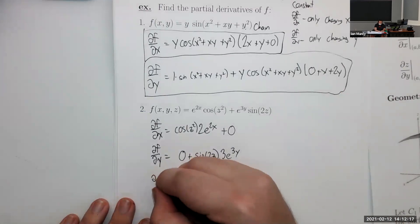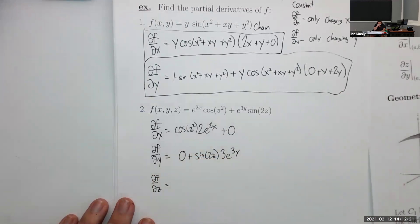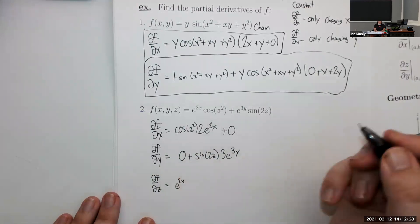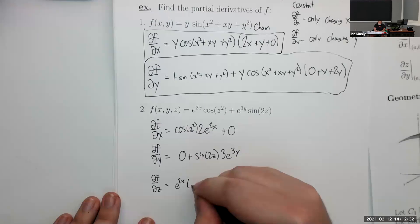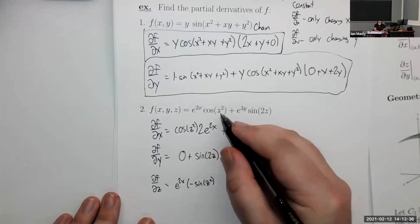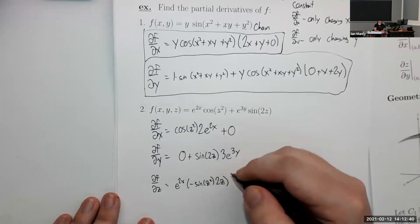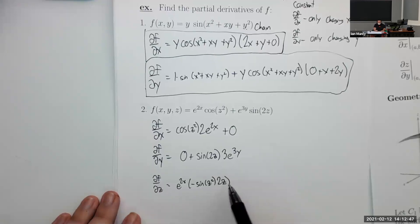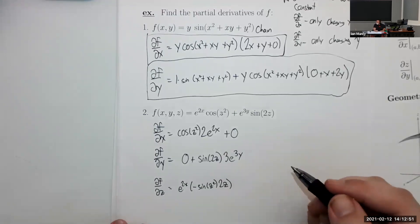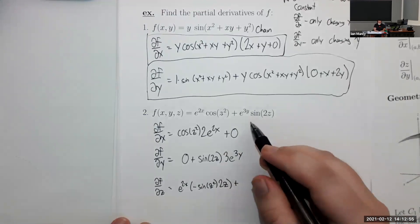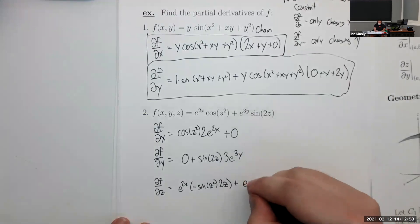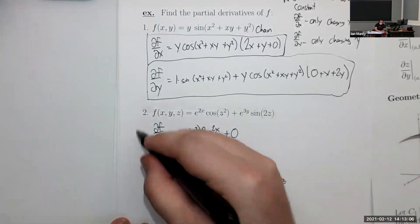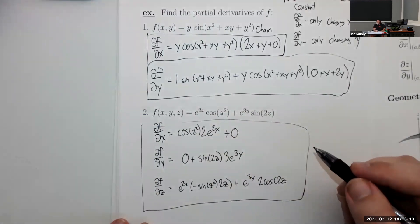For partial f partial z: there are z's in both terms, so we won't lose a term. e^(2x) is a constant. The derivative of cos(z²) is negative sin(z²) times the derivative of z², which is 2z. Next, e^(3y) is a constant. The derivative of sin(2z) is 2·cos(2z). So partial f partial z = e^(2x)·(-sin(z²))·2z + e^(3y)·2cos(2z). Make sure to put a line through your z's since 2 and z can look similar.